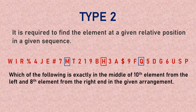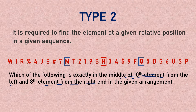Type 2 questions require finding the element at a given relative position in a sequence. Relative position means position with respect to some other element. For example: which element is exactly in the middle of the 10th element from the left and the 8th element from the right? We first need to identify the left and right sides of the sequence.